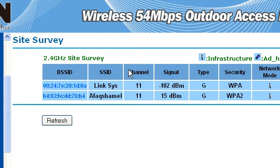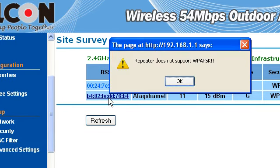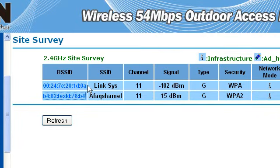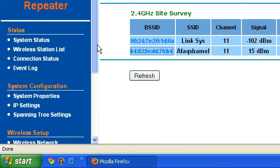Repeater mode cannot support WPA and WPA2. You have to change your security to WEP, wired equivalent privacy. Then select, and as you can see here, repeater does not support WPA. You have to change the settings. Then after connecting to the device, you can check your status here.